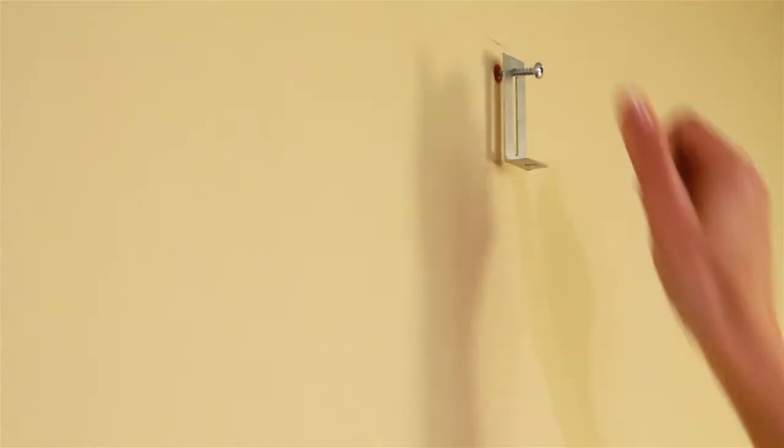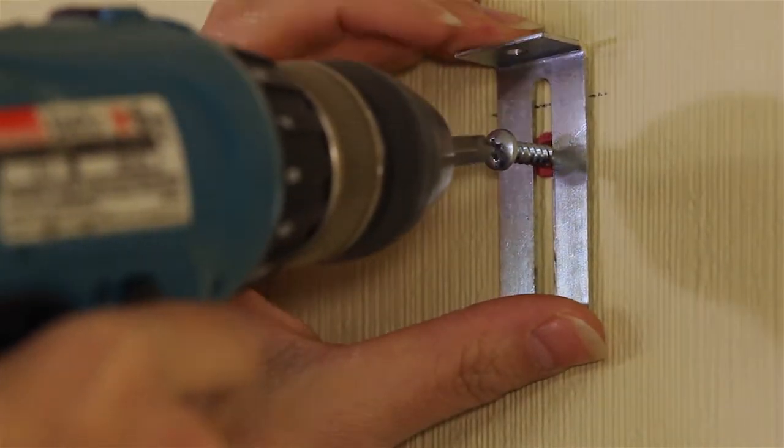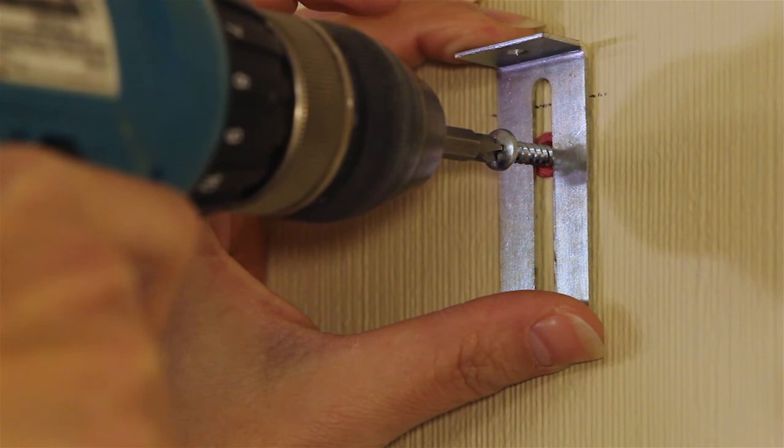Position the top mounting clips with the longer tab down and the top of the clip slightly above the marks on the wall. This will allow for the board to be lifted and set in place. They will be tapped down into place later.